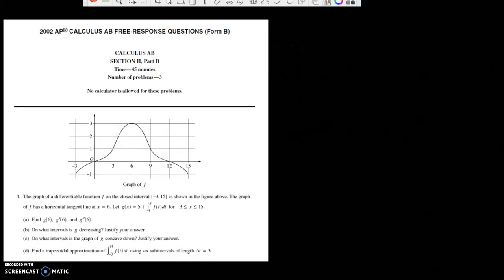It says find g of 6. So good thing is it gave us the equation. Let me write that down over here. g of 6 is going to be 5 plus the integral of 6 to 6 f of t dt. So when you do this, it went nowhere from 6 to 6. So g of 6 is going to equal 5.